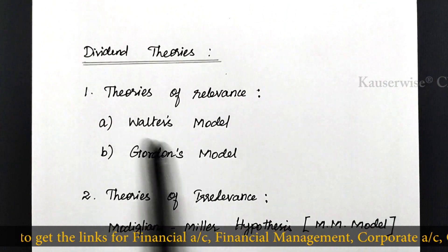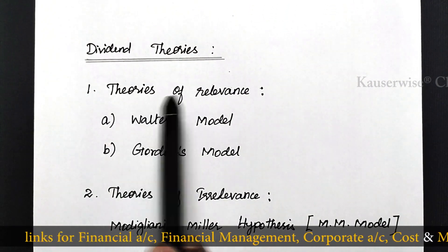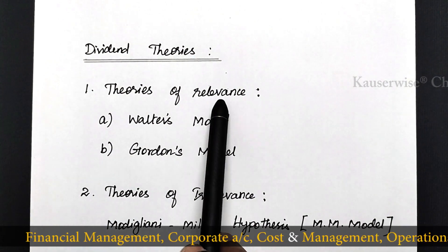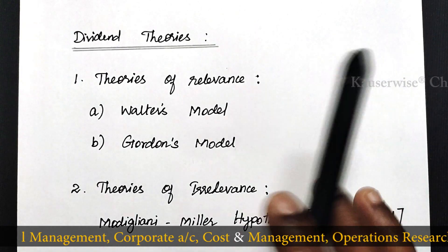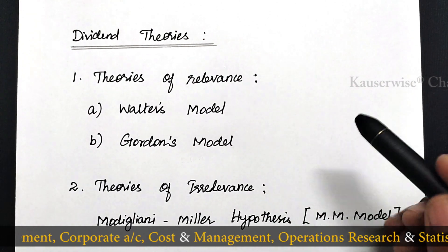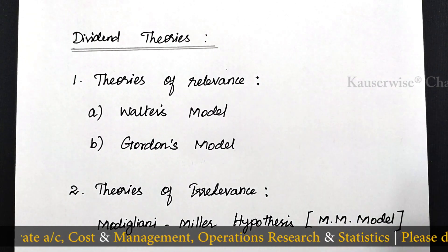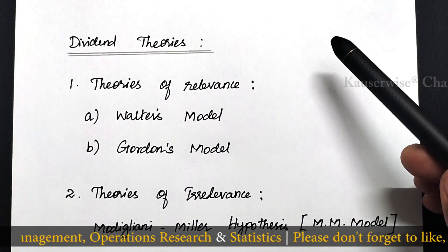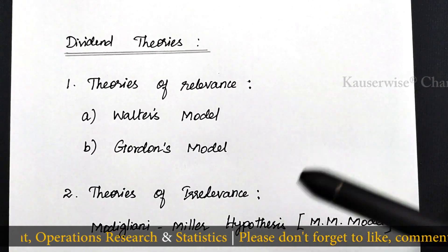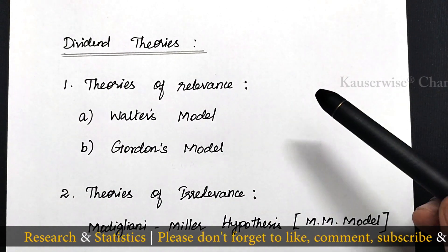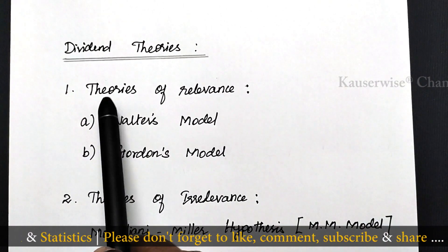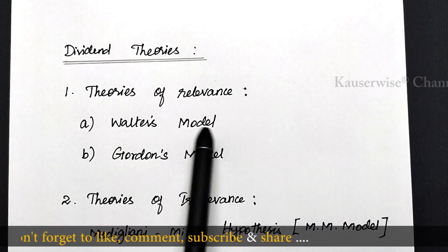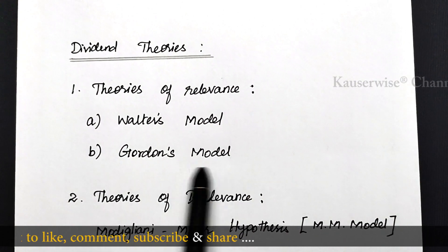Under dividend policy, we have two different theories. The first one is theories of relevance and the second one is theories of irrelevance. Theories of relevance means dividend policy of a firm has a direct effect on the value of shares in the market, because higher dividend will increase the value of shares whereas lower dividend decreases its value. Under this we have two different models: the first one is Walter's model and the second one is Gordon's model.